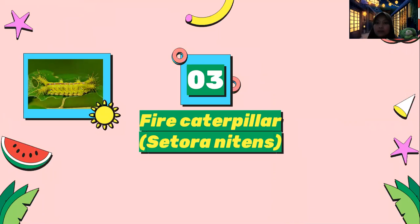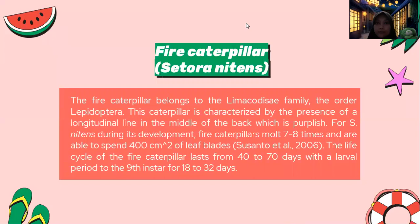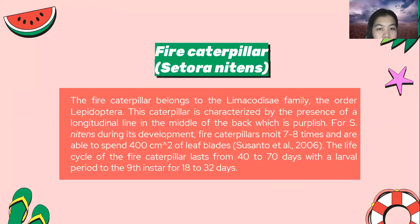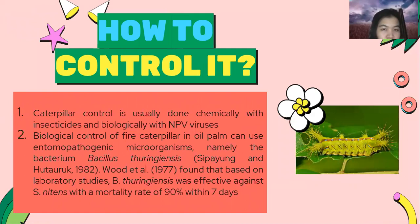The third pest is the fire caterpillar, or Setora nitens. The fire caterpillar belongs to the family Limacodidae, order Lepidoptera. This caterpillar is characterized by the presence of a longitudinal line in the middle of the back, which is purplish. During its development, the fire caterpillar molts 7-8 times and is able to span 400 cm of leaf blades. The life cycle of the fire caterpillar lasts from 40 to 70 days, with a larval period in the last instar of 18 to 32 days.